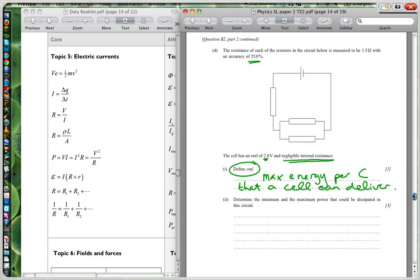Now when it says negligible internal resistance, it means that none of the energy is lost. So all the energy, 2 volts here, while it's got an EMF of 2 volts, all that energy, 2 joules per coulomb, is going to be delivered to the circuit here.